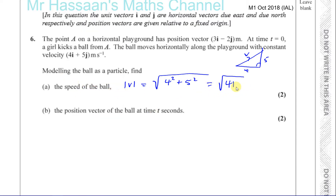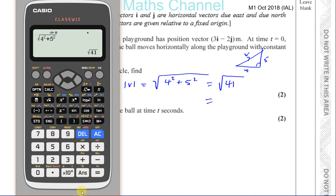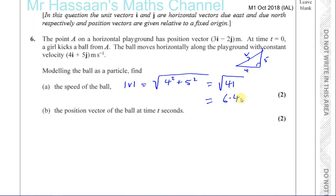They didn't tell you how to give the answer, so you can leave it as the square root of 41, or write it to 3 significant figures as 6.40 meters per second. Both are perfectly fine. Then that's part A done, and part B says: find the position vector of the ball at time t seconds.